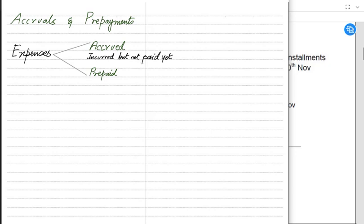An accrued expense means an expense incurred but not yet paid. We have taken the services from our vendors but haven't paid for those services yet. For example, our staff has worked for us but we haven't paid them yet. That payment to be made in the future is an accrued expense, and it is a current liability for the business.